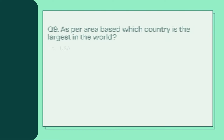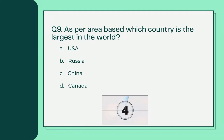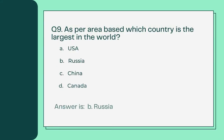As per area, which country is the largest in the world? A. USA B. Russia C. China D. Canada. Answer is B. Russia.